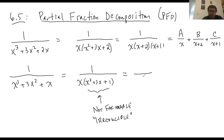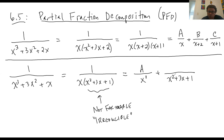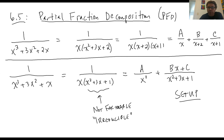So the form here is they each get their own fraction: x gets one, and x² + 3x + 1 gets the other. Now, what goes on top? If the denominator factor has degree 1, the numerator is a number. But if the factor is an irreducible quadratic — degree 2 — the numerator is not just a number; it's Bx + C, one degree down from 2 to 1. So you get A over x, and (Bx + C) over (x² + 3x + 1). That's the setup for that problem.